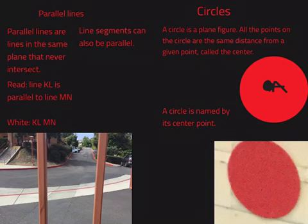A circle is a plane figure where all the points are the same distance from a given point called the center.